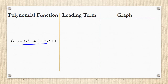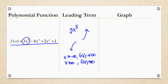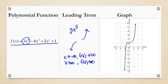f of x equals 3x to the 5th minus 4x to the 4th plus 2x squared plus 1. Here our leading term is 3x to the 5th. This is an odd-powered function with a positive k value. So as our x's are approaching negative infinity, your function should be going towards negative infinity, and as your x values are approaching positive infinity, your function should also be approaching positive infinity. Let's see what happens with the graph — you can see this holds true: on the left-hand side we're going towards negative infinity, and on the right-hand side we're going towards positive infinity.